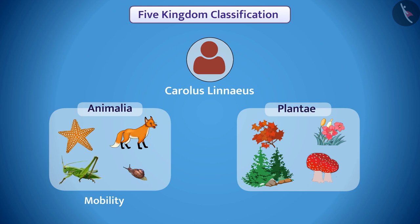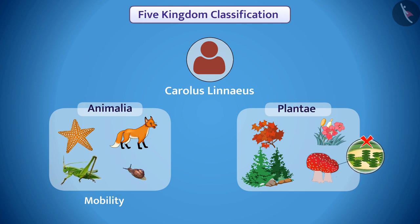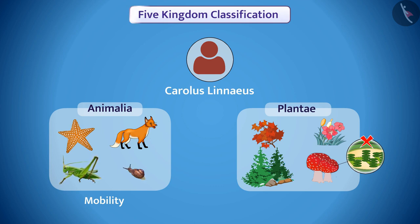But there was a problem with this classification. Fungi, which does not contain chlorophyll, is not a plant yet is kept in the kingdom Plantae. To overcome these problems, various attempts were made to classify organisms, out of which the five kingdom classification is the most popular.